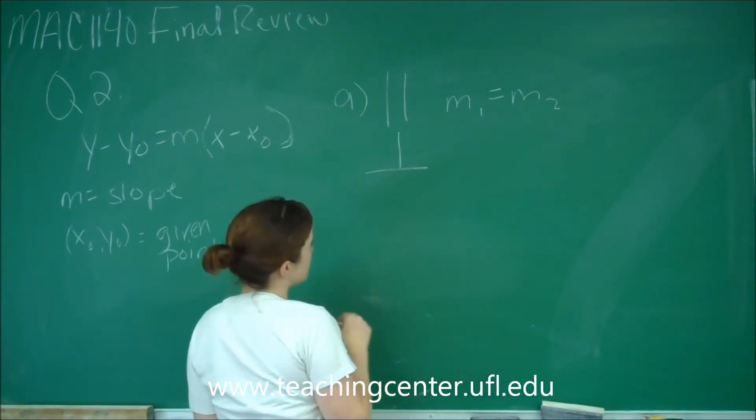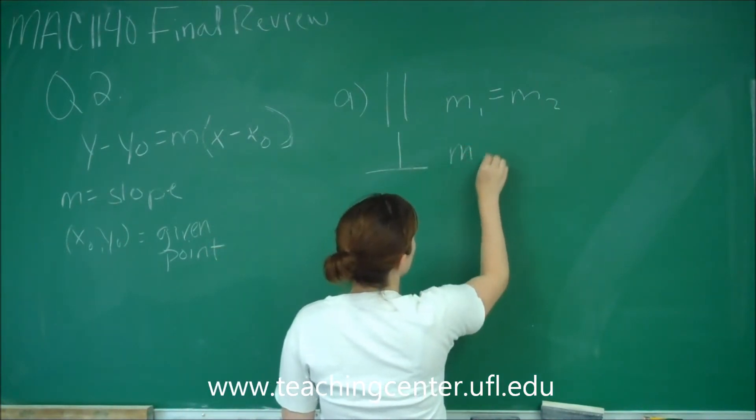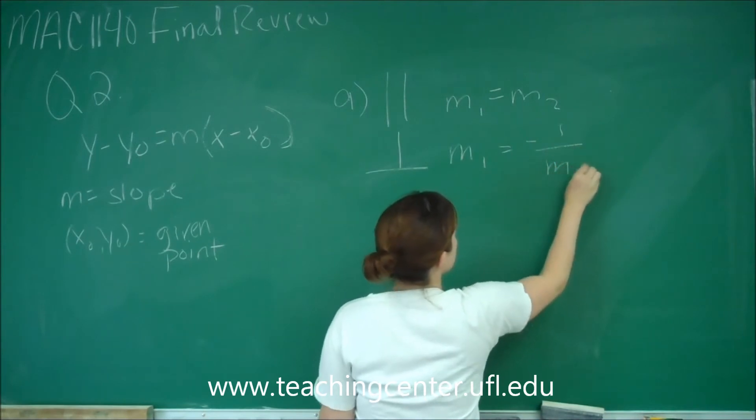If our lines are perpendicular, which is denoted by a little t, m sub 1 equals the negative reciprocal of m sub 2.